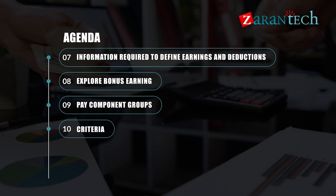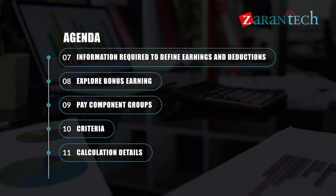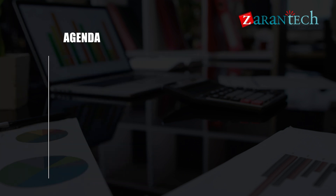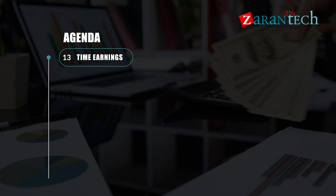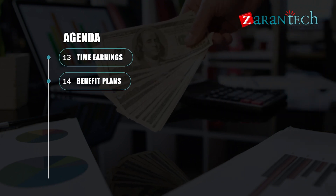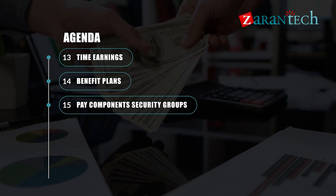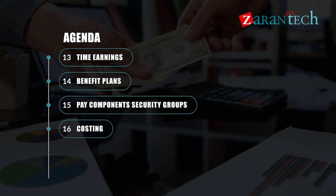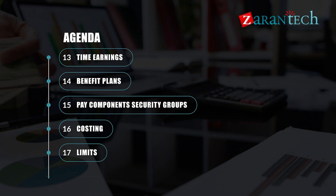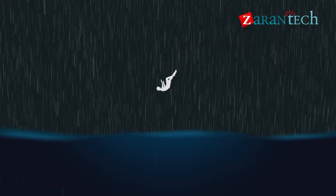10. Criteria. 11. Calculation details. 12. Compensation elements. 13. Time earnings. 14. Benefit plans. 15. Pay component security groups. 16. Costing. 17. Limits. 18. ROE Canada. Let's dive in.